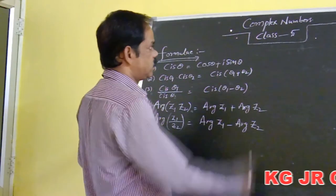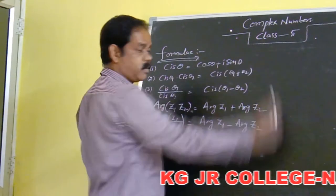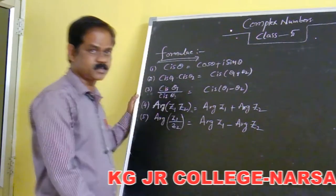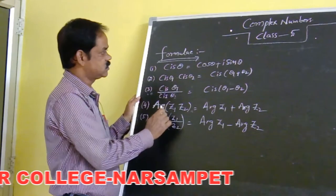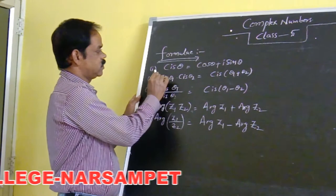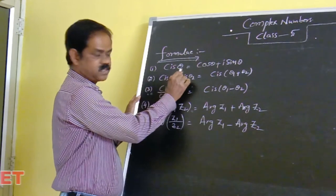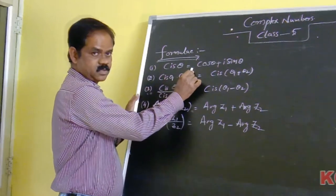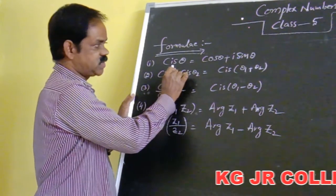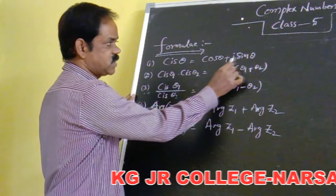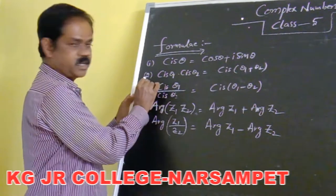Good morning students. Today is class 5 on complex numbers. Today students are writing the first formulas. The first formula is Cis theta, which is equal to cos theta plus i sin theta.